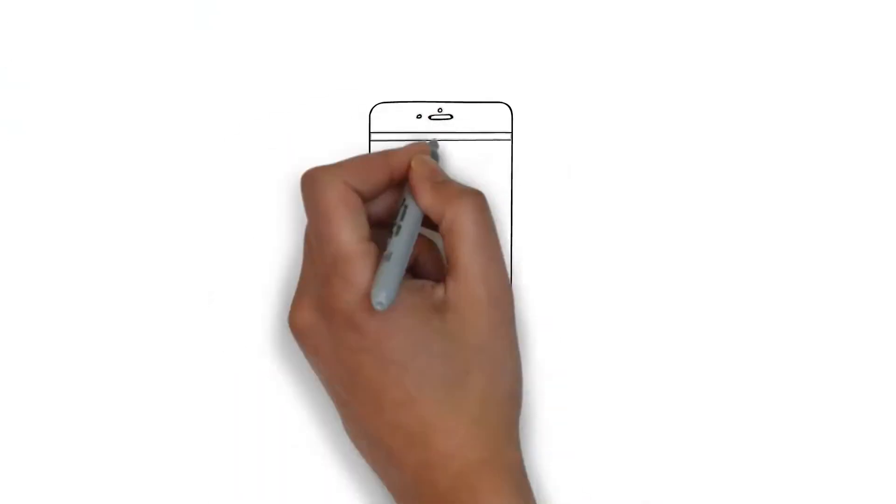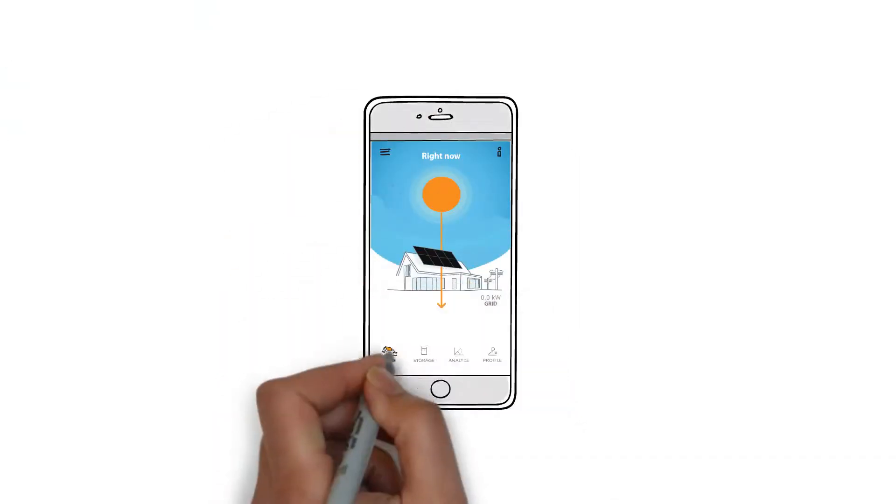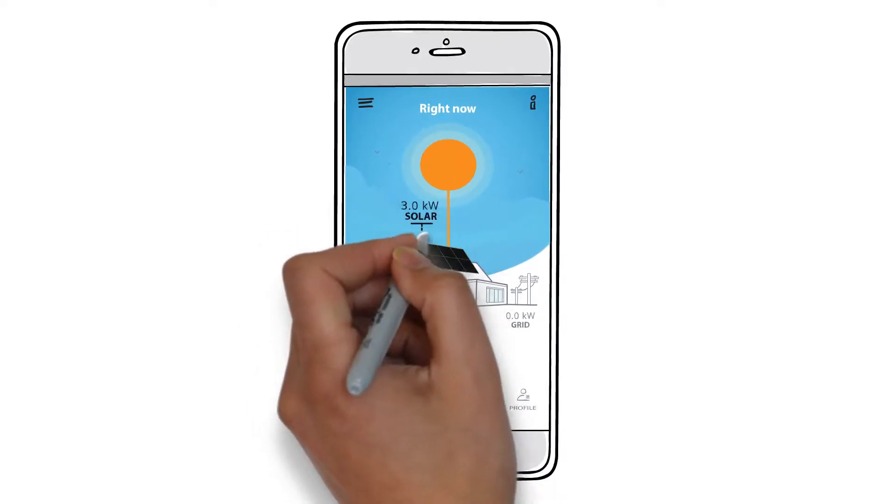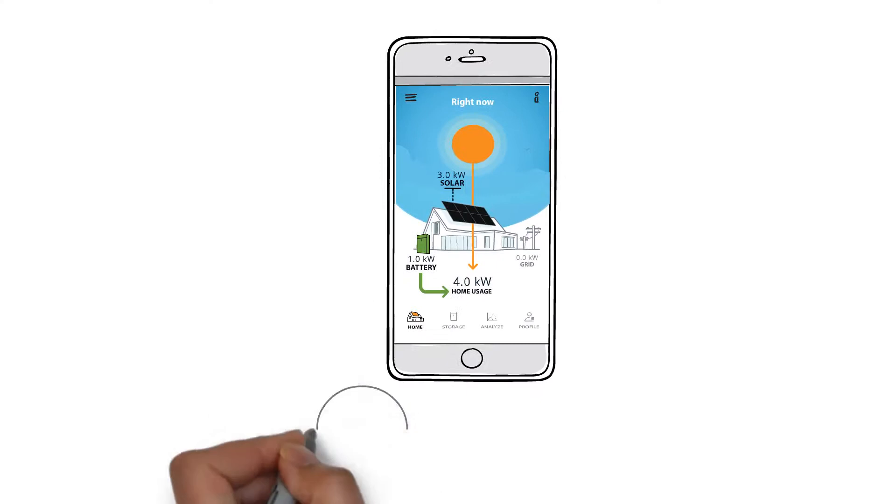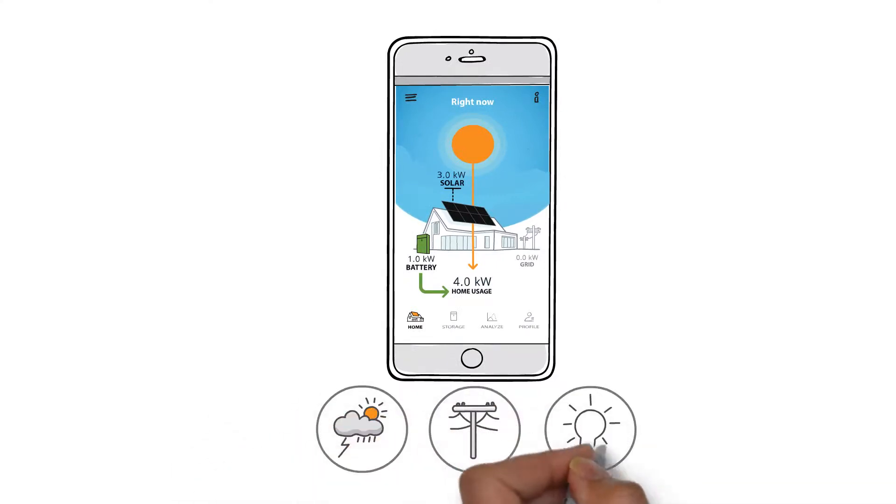Managing your storage is easy, too. With the MySunPower app, you can monitor your solar, storage, and home energy usage in real-time, and adjust your settings based on weather alerts, utility rates, energy preferences, and more.